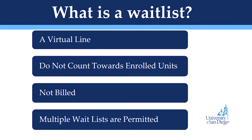If you are waitlisted in a course, this will not apply to your overall enrolled units. For example, if you enrolled in 9 units and waitlisted in one 3-unit course, your enrollment would be 9 units and not 12. You will not be billed for your waitlisted course, and you are able to add yourself to multiple waitlists for the same course.